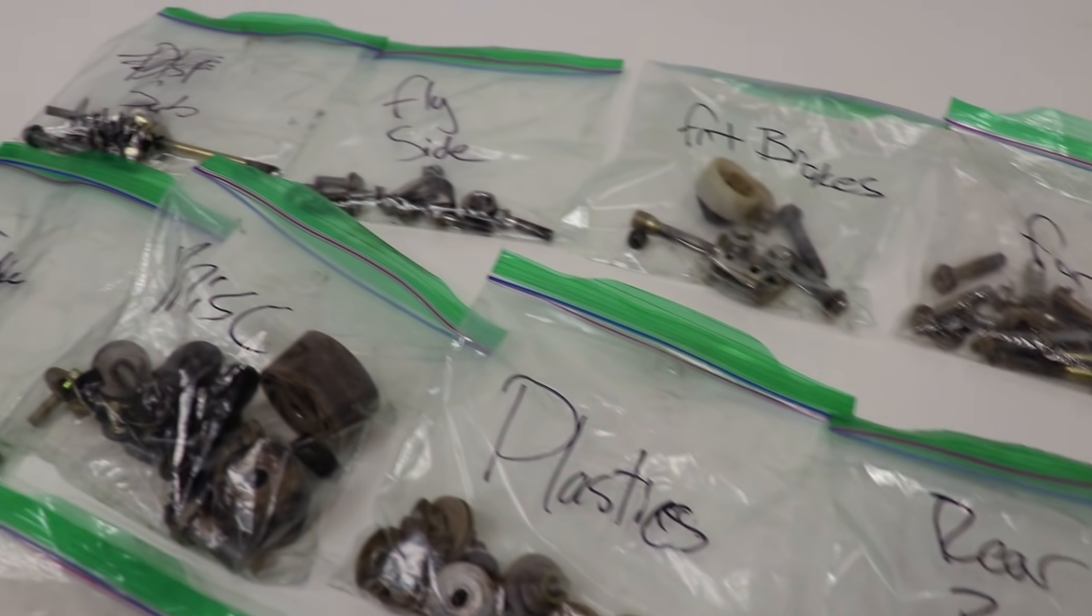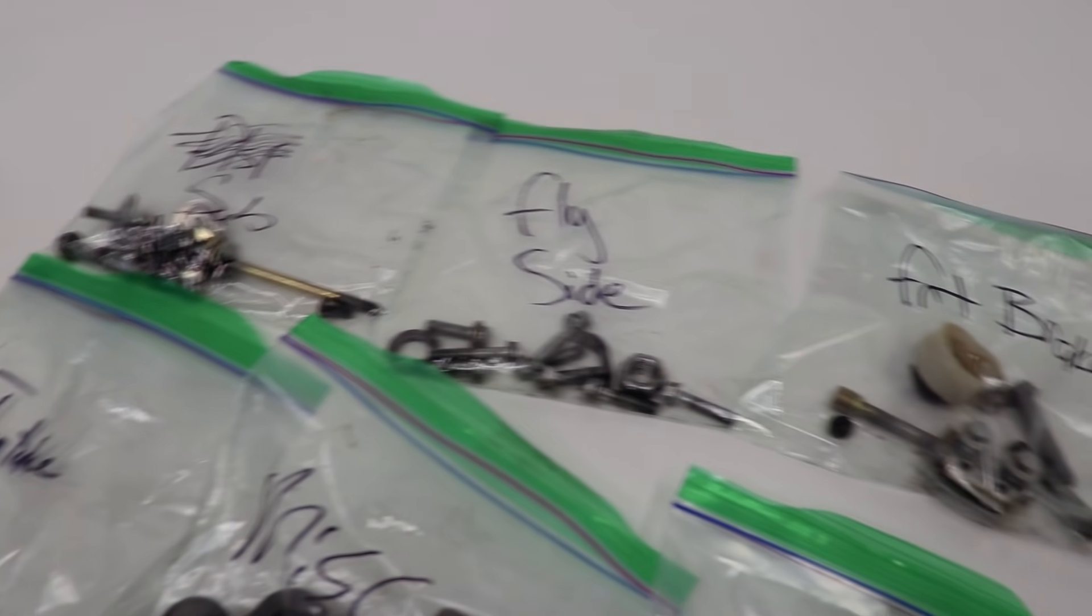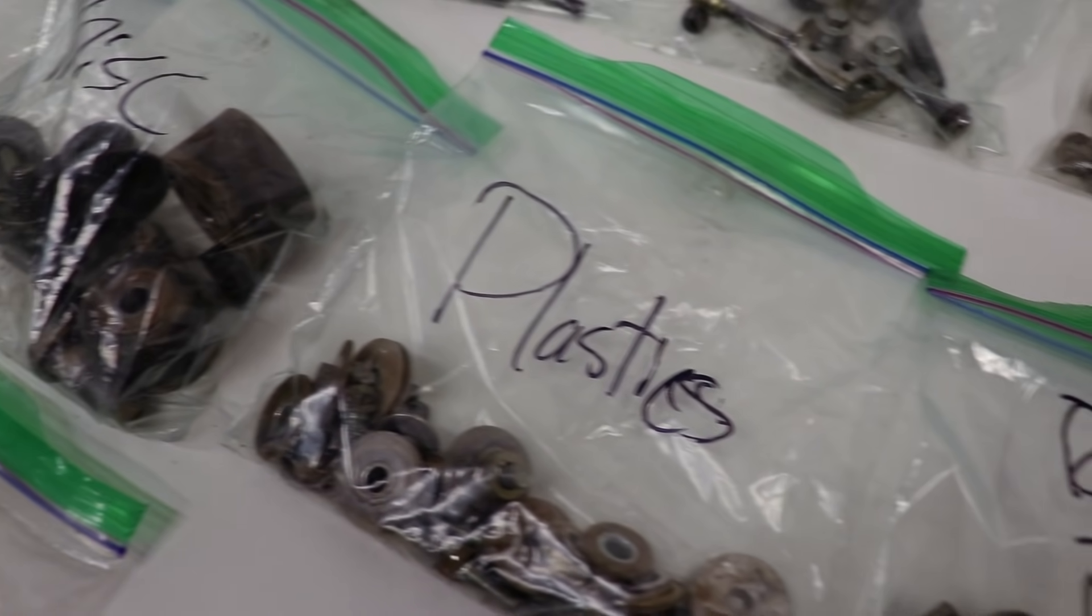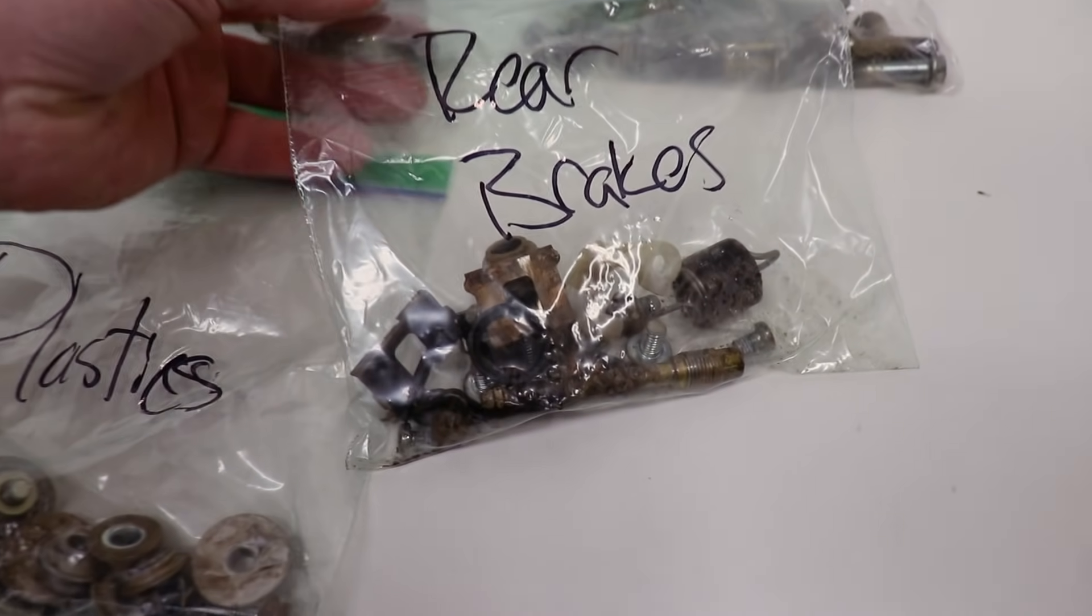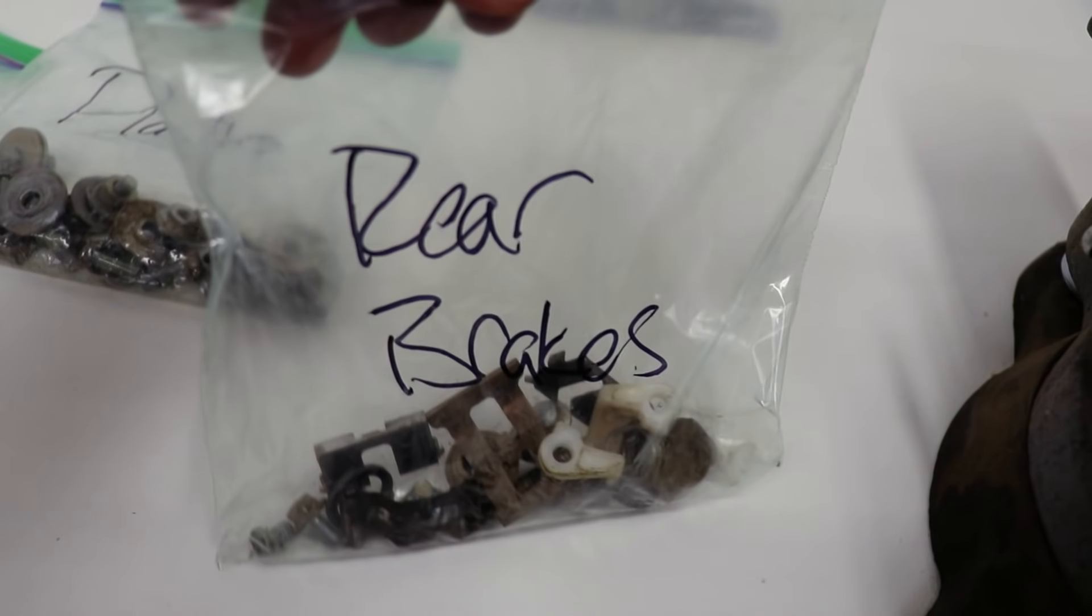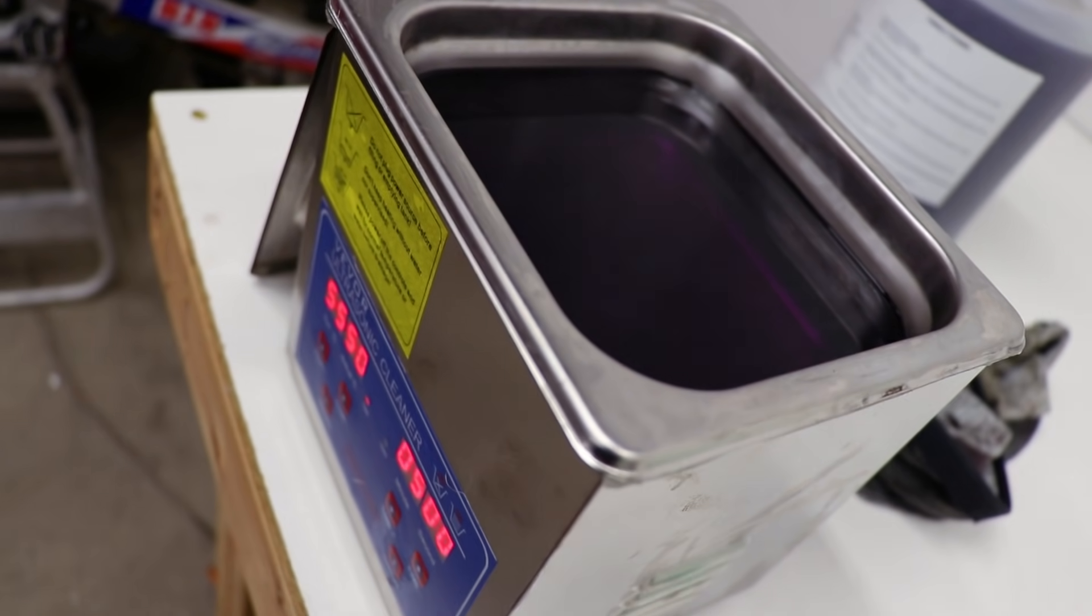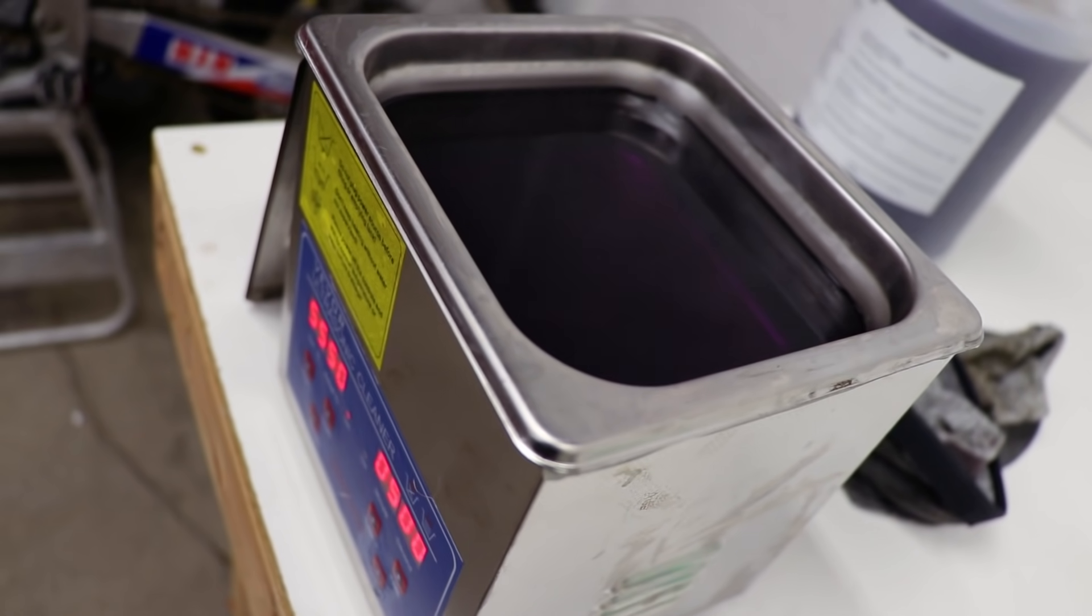So the first batch is gonna be the dirtiest set of hardware. Let's take a look here. I'm thinking it's gonna be rear brakes. This stuff is looking kind of nasty. Now I wish I had a little basket to drop this stuff into before I put it into the cleaner. I don't, so it's just gonna have to go straight into the degreaser.